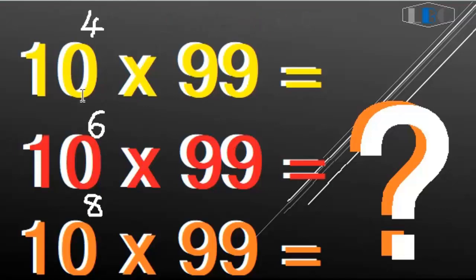So now you can see 10 to the 4th times 99, 10 to the 6th times 99, and 10 to the 8th times 99. Now I will show you one by one. Let's start and see together.